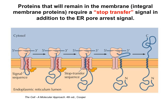Similarly, any protein that has to end up in the membrane has to be brought to one of these translocation complexes while it's being synthesized. But instead of finishing the synthesis, a stop-transfer signal is recognized, and the pore itself opens up and allows the protein to exit into the membrane. Synthesis is then completed with the C-terminus in the cytosol, the N-terminus inside the lumen, and the protein stuck in the membrane.